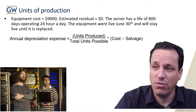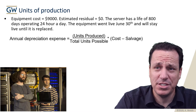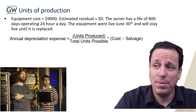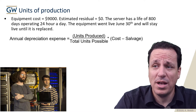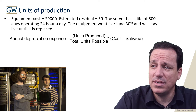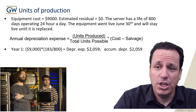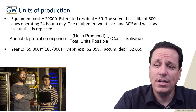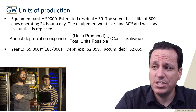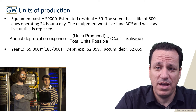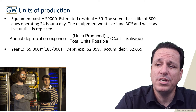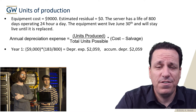The formula for annual depreciation expense under units of production is: units produced divided by total units possible, multiplied by cost minus salvage. Salvage is zero in this case. In year one, we have $9,000 times 183 days — that's 365 divided by 2 — so 183 divided by 800, which equals depreciation expense of $2,059. Accumulated depreciation is $2,059.